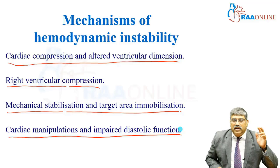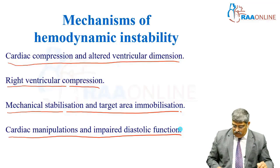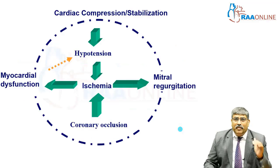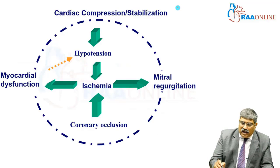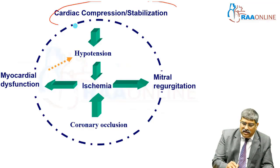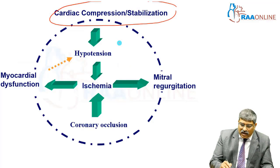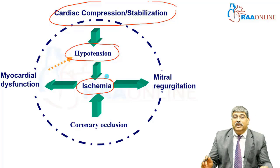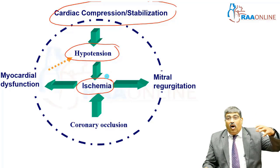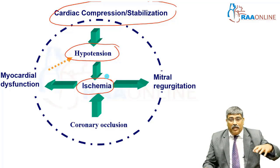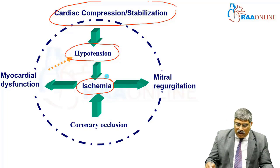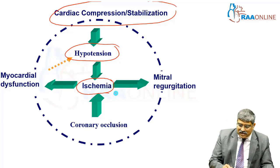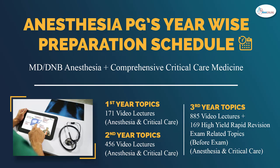Cardiac manipulation can impact diastolic function and all these factors can cause hemodynamic instability. Coming to cardiac compression specifically, it leads to hypotension, which might aggravate the already ischemic myocardium, and this ischemia can lead to ischemic mitochondria.